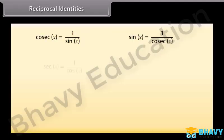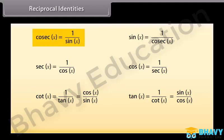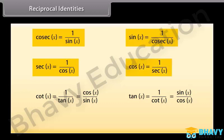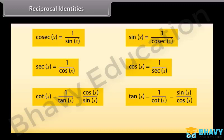Reciprocal identities. Look at these identities: csc x is equal to 1 over sin x; sin x is equal to 1 over csc x; sec x is equal to 1 over cos x; cos x is equal to 1 over sec x; cot x is equal to 1 over tan x, which equals cos x over sin x; and tan x is equal to 1 over cot x, which equals sin x over cos x. These are the reciprocal identities.